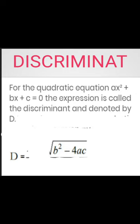For the quadratic equation ax² + bx + c = 0, the expression b² - 4ac is called discriminant and denoted by D. Its formula given here D = √(b² - 4ac).